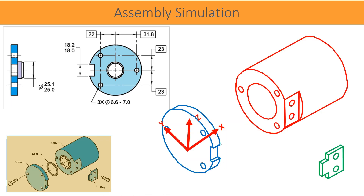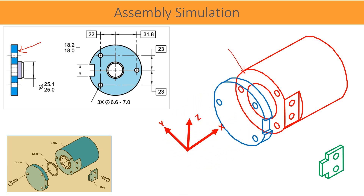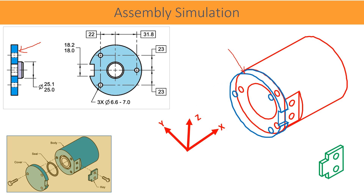Let us demonstrate with a graphical animation how this assembly is going to happen. The first step in the assembly is that the bottom plane of the cover plate would rest on the surface of the body part. This plane does not allow the cover plate to move linearly along the body axis — in terms of the coordinate system, it is along the X axis. Also, this cover plate cannot rotate horizontally and vertically, that is, cannot rotate about Y and Z axis.